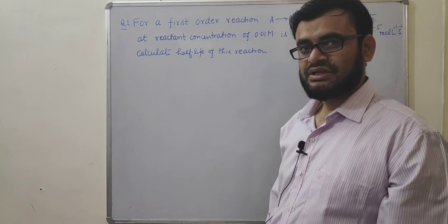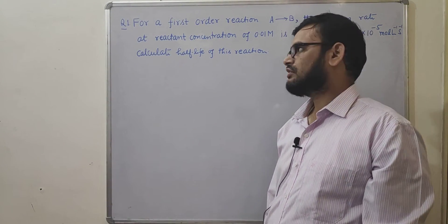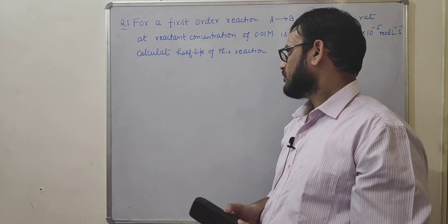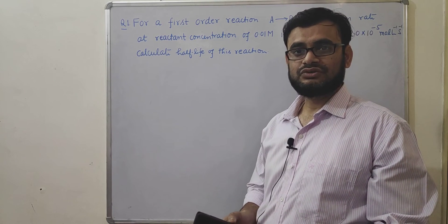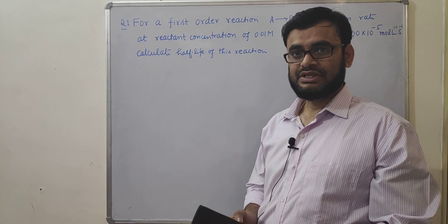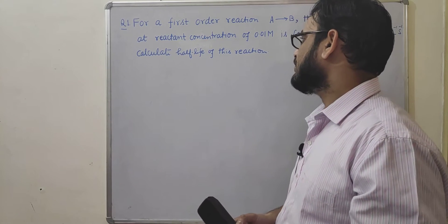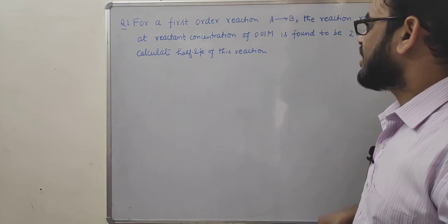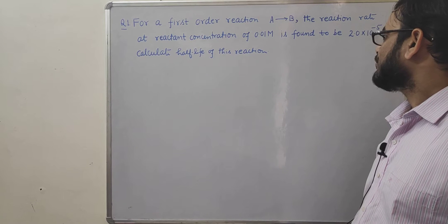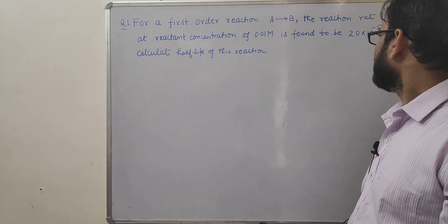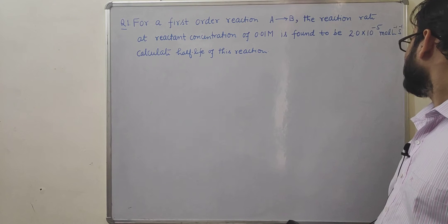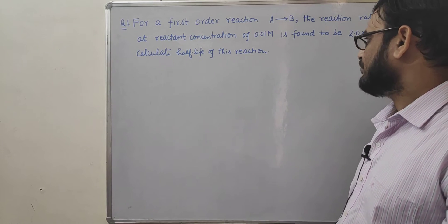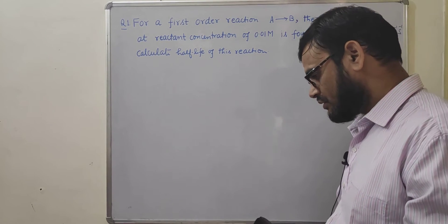Hello everyone. In the previous lecture we learned about the basic concept of first order reactions. In this lecture we will learn how to solve different problems based on those concepts. Question number one: for a first order reaction A to B, the reaction rate at reactant concentration of 0.01 molar is found to be 2×10⁻⁵ mol·L⁻¹·s⁻¹. Calculate the half-life of this reaction.